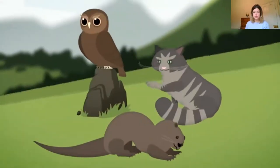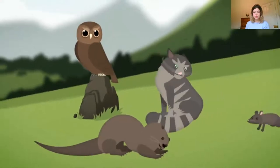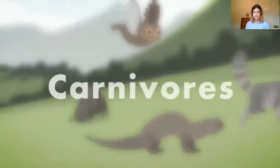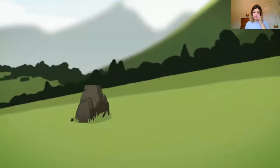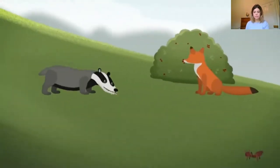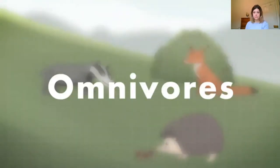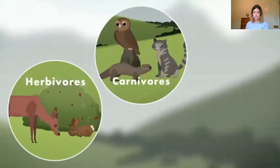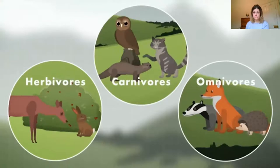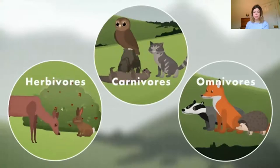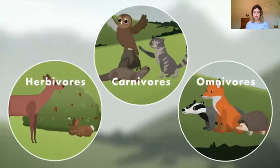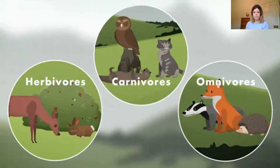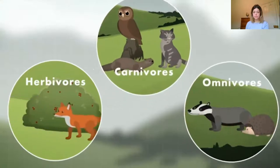Other animals such as otters, the tawny owl and the Scottish wildcat only eat meat. There are some animals that eat both meat and plants — these are called omnivores. Foxes, hedgehogs and badgers are all omnivores. As you can see, even though there are lots of animals in the animal kingdom, we can put them into three different groups based on what they eat: herbivores eat plants, carnivores eat meat, and omnivores eat plants and meat. Simple.